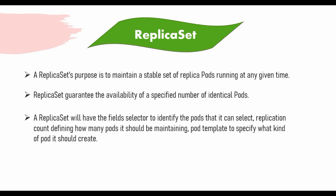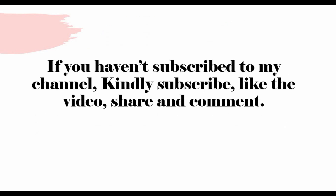In a replica set, there are fields to configure. There is a match-label selector to identify which pods can be part of this replica set. You also define the replication count — how many pods should be maintained, like three pods for this container. You also define a template — what kind of pod it should create for a given application. We'll have a hands-on where we define all these fields: selector, replication count, and the template.